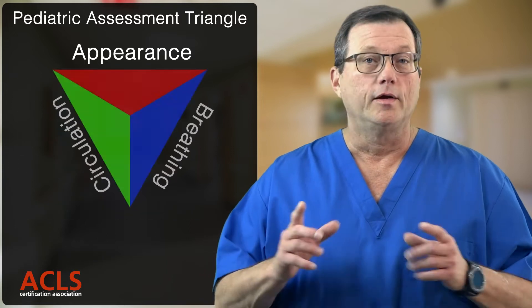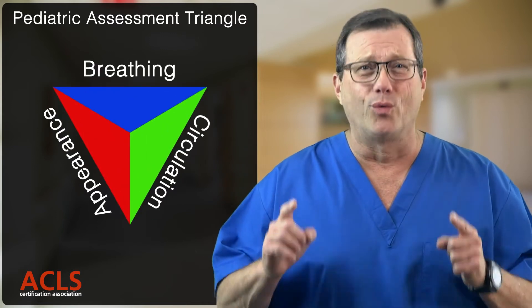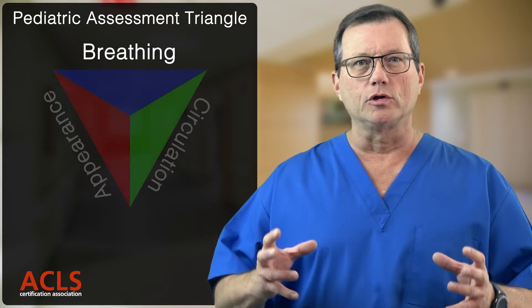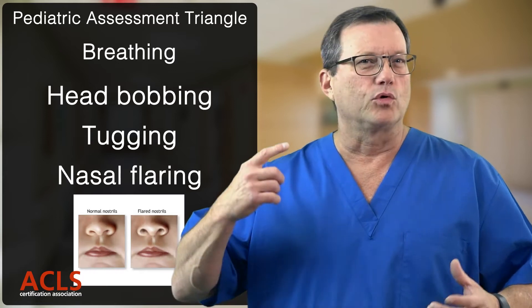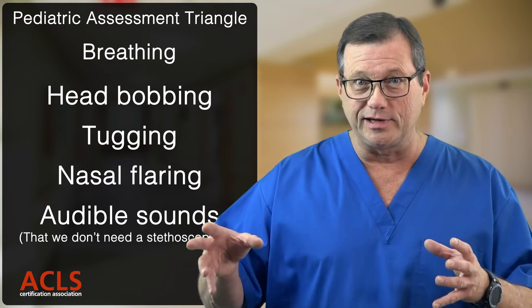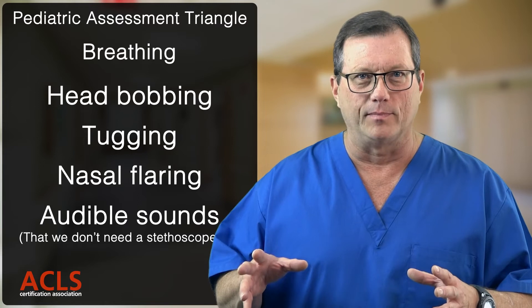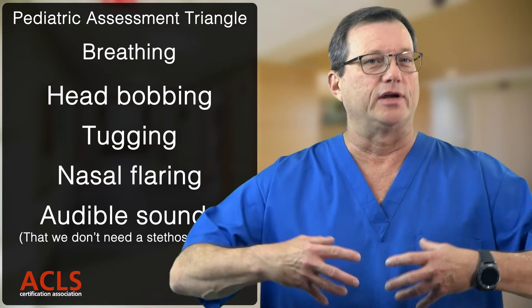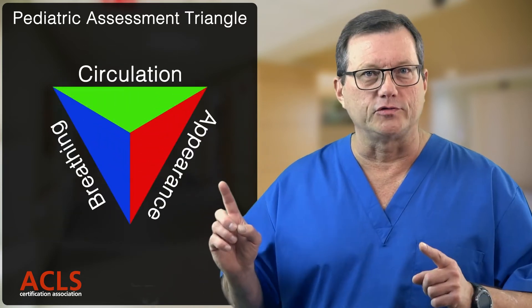The next section of the Pediatric Assessment Triangle is Breathing — specifically the work of breathing. Is this child having a hard time breathing? We're looking for head bobbing, tracheal tugging, and nasal flaring. We're also listening for audible sounds without a stethoscope: do we hear grunting, stridor, or wheezing from across the room? That tells us this child is working hard to breathe and we need to address it.